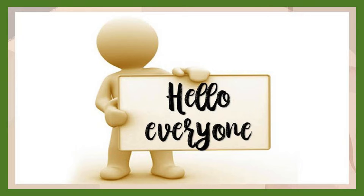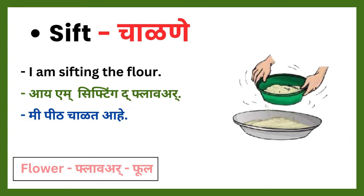Our first verb is sift. Sift means chalne. I am sifting the flower — me peet chalat ahe. Note that F-L-O-U-R and F-L-O-W-E-R both have the same pronunciation — flower — but the spelling is different.